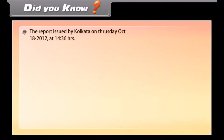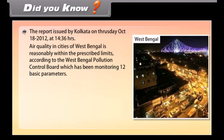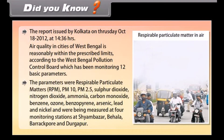According to a report issued from Kolkata on Thursday, October 18, 2012, air quality in cities of West Bengal is reasonably within the prescribed limits according to the West Bengal Pollution Control Board, which has been monitoring 12 basic parameters including respirable particulate matters (RPM), PM10, PM2.5 and sulfur dioxide.